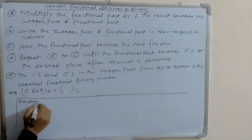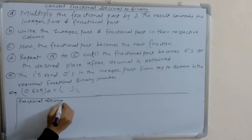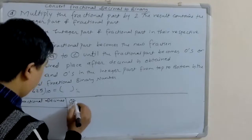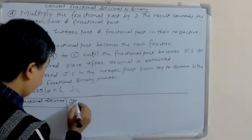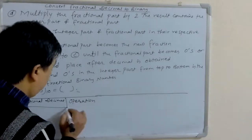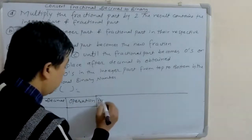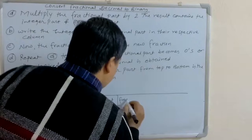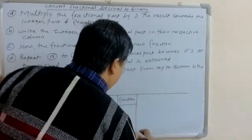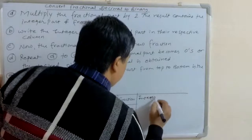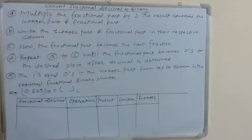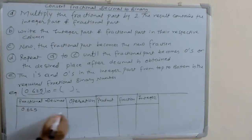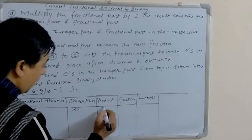The table columns are: fractional decimal, then operation, then product, then fractional part, and integer part.